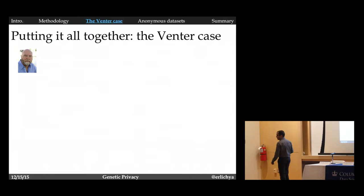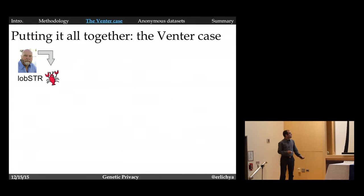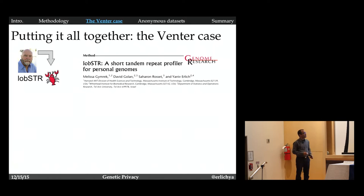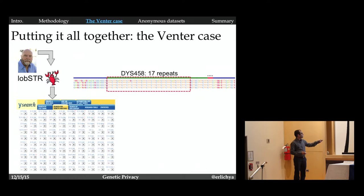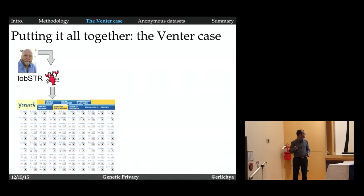We took the genome of Craig Venter from the NCBI database. We recovered the STRs on his Y chromosome, these short-term repeats, using lobster. This is an algorithm we developed in my group for a different project a few years ago. The paper is available in Genome Research. Here is a real example from Craig Venter's data. For a marker called DYS458 on the Y chromosome, we found 17 repeats. These are the four sequencing reads that support that, that came from Craig Venter's genome.